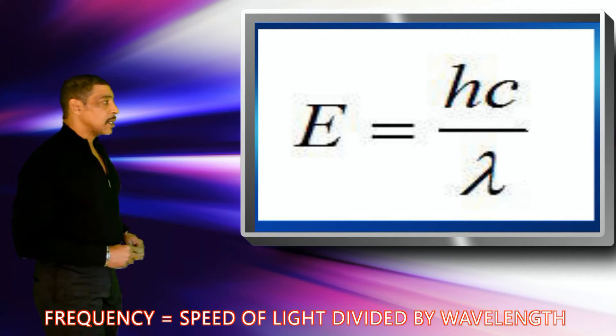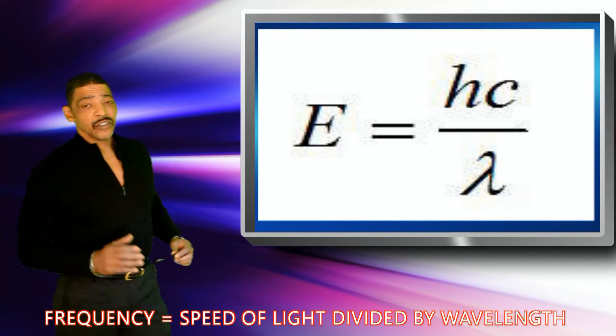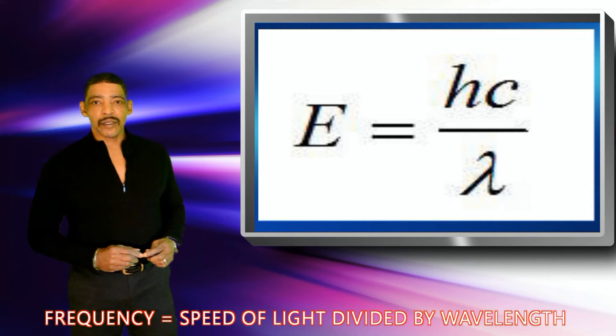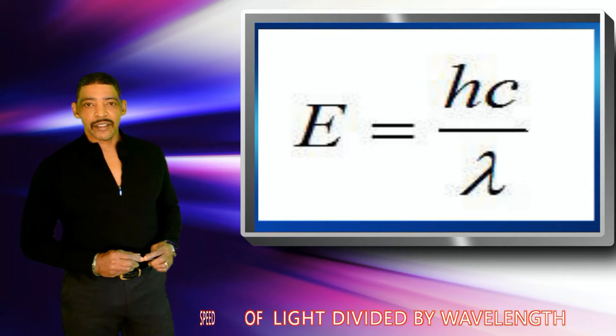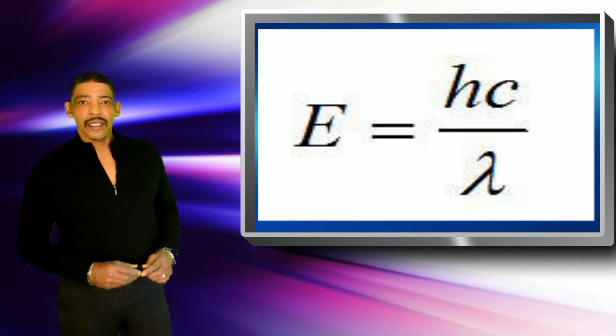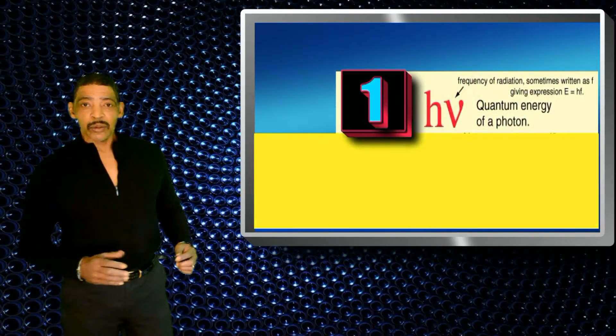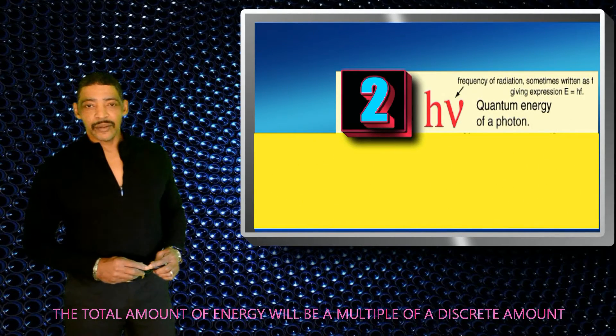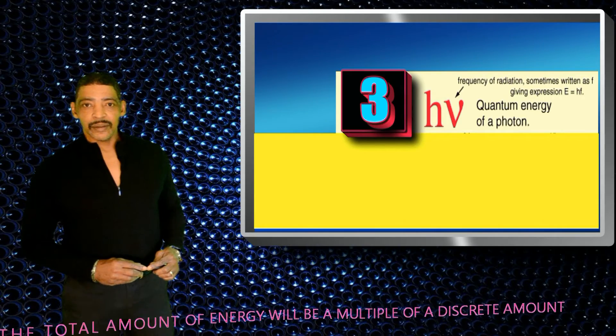According to Planck, the amount of energy released or absorbed will be a whole number multiple of Planck's constant times frequency. In other words, the energy may be equal to h nu, 2 h nu, 3 h nu, etc.